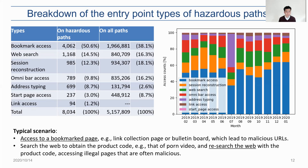The right figure shows the changes in the shares of entry point types. The trend remains more or less the same across all months. To confirm the trend, we looked into the logs manually and found several typical scenarios leading to malicious URLs. The first is accessing a bookmark page, such as a link collection page or bulletin board, which led to malicious URLs. The second is searching the web for a product code, then researching with that code and finally accessing malicious illegal pages. Since bookmark access occupies the top share, we will look into it in detail.